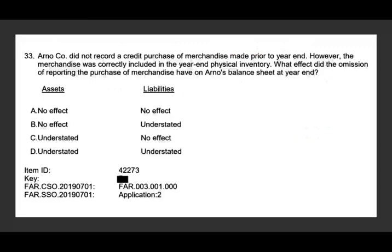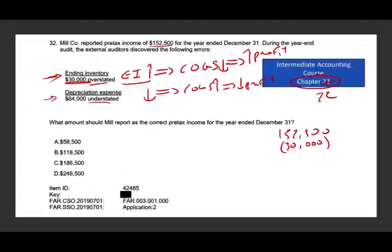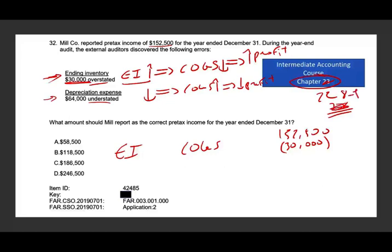This is a very important relationship tested heavily on the exam — the relationship between ending inventory and cost of goods sold, covered in chapters 8 and 9 of intermediate accounting. When ending inventory goes up, cost of goods sold goes down; there is a negative relationship between the two. On the exam, you have to immediately know: ending inventory overstated means cost of goods sold was understated, and you have to reverse it.